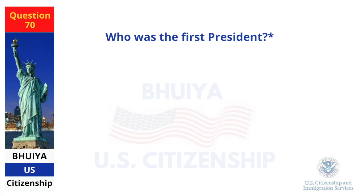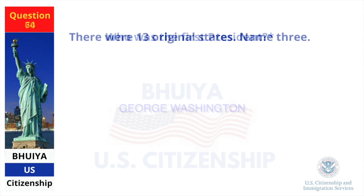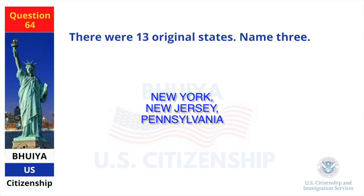Who was the first president? George Washington. There were 13 original states. Name three. New York, New Jersey, Pennsylvania.